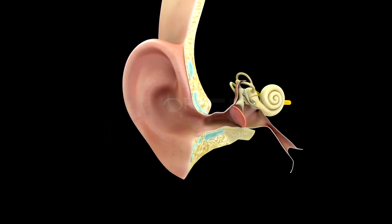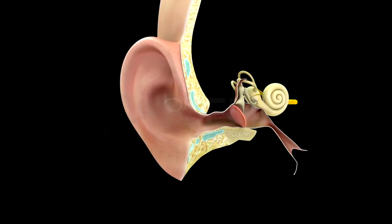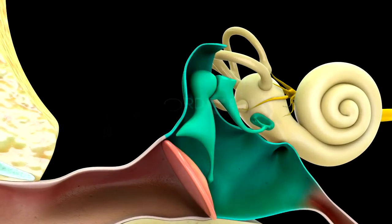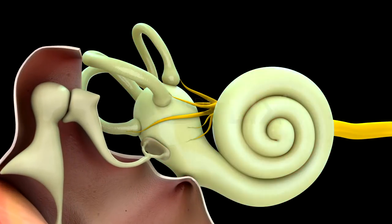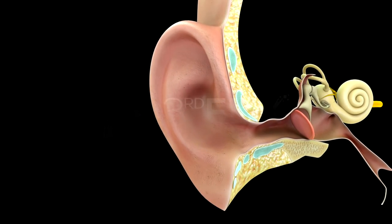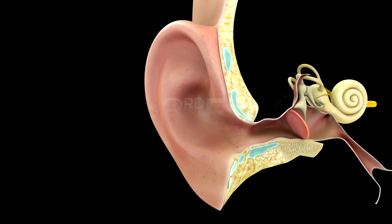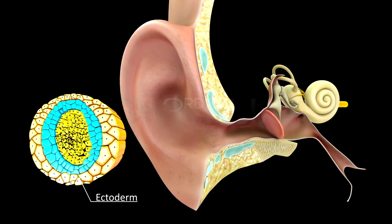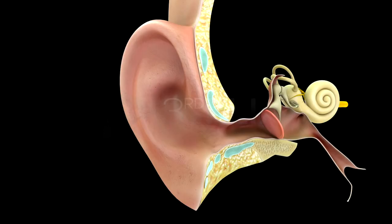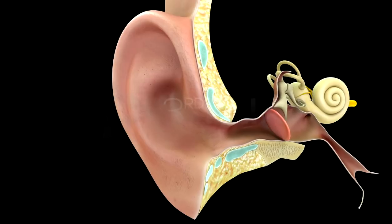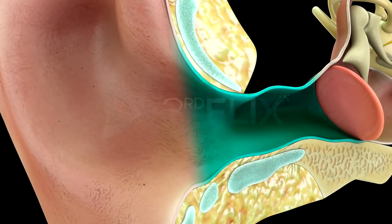Anatomically, the ear is divided into three regions: namely the external ear, the middle ear, and the inner ear. The external ear is derived from the ectoderm. It consists of the pinna or auricle, and the external auditory meatus or auditory canal.